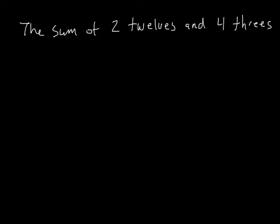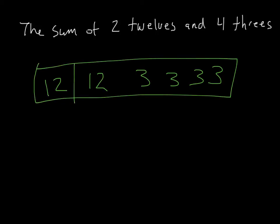The sum of two twelves and four threes. Let's draw this one out to help us a little bit. So we're going to have two twelves: twelve and twelve, and four threes: one, two, three, four. We're going to use a model for this one. The easiest way is just put it inside a rectangle.